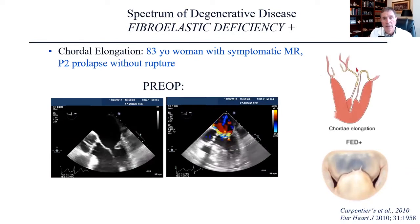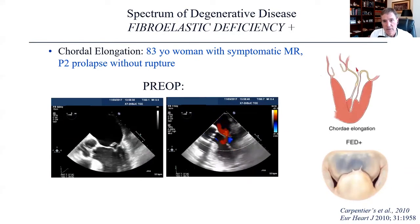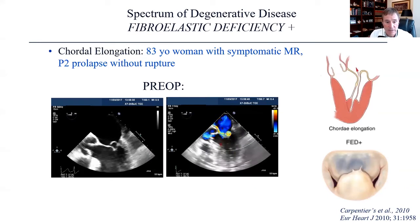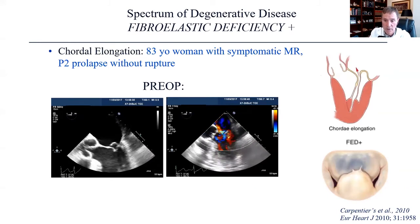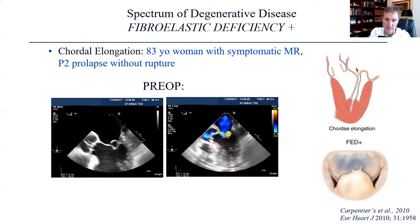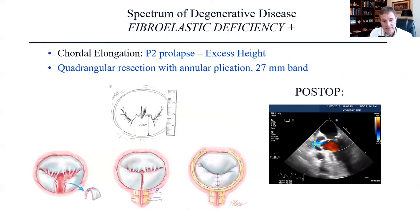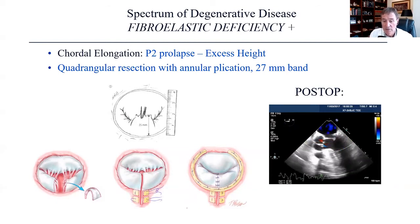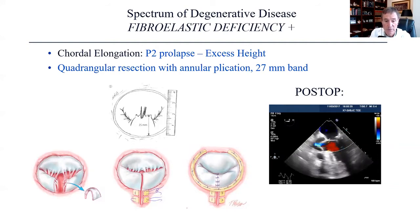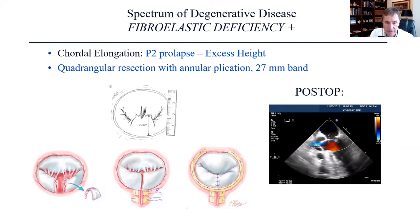Here's an 83-year-old woman with fibroelastic deficiency plus — not only an abnormality of the cord, but leaflet abnormality with excessive height, width, or bulk of the leaflet itself. In this case we had to take more than just a limited triangular resection. We did a quadrangular resection, re-approximated the annulus with a plication, and reconstructed the leaflet itself. Post-op showed no regurgitation.